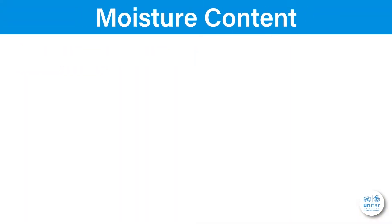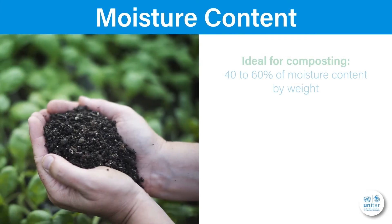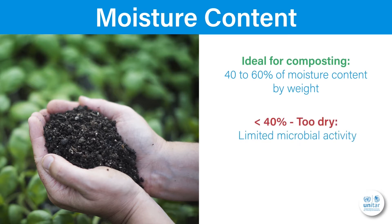Let's start with water content, also called moisture. Composting proceeds best at a moisture content of 40 to 60 percent by weight. At lower moisture levels microbial activity is limited. If you are blowing air through your compost system you will need to be careful not to dry it out.